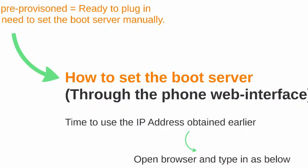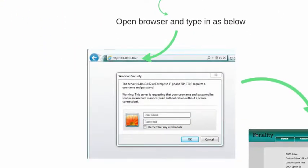Remember the IP address we confirmed earlier? We're going to use that IP address with your web browser to log into this phone. Inside my network, my test phone is on 10.10.13.162. I confirmed that by going into the menu, looking at the status, grabbing the IP, and plugging it right into my web browser and hitting enter. It will pop up with a username and password field so that it is secured. If you do not have this information, please contact support — via ticket, live chat, or call — and we'll supply you the username and password for your phone's make.